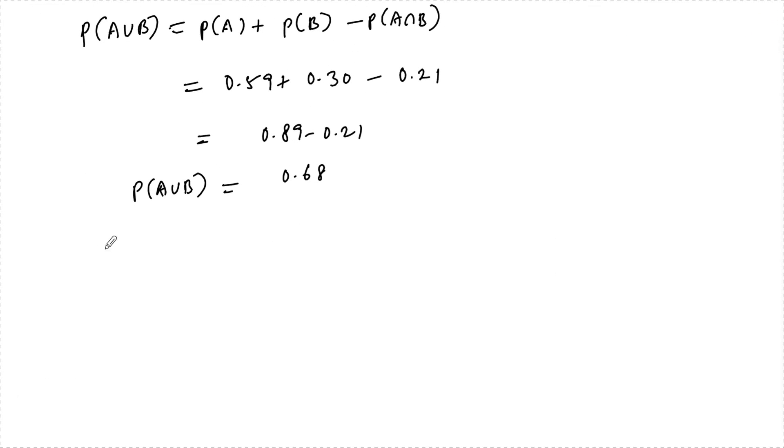And also we know that P(A complement intersection B complement) is equal to 1 minus P(A union B), since we know by De Morgan's law A complement intersection B complement is equal to A union B whole complement.